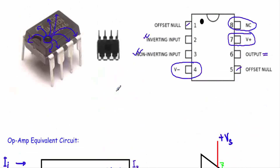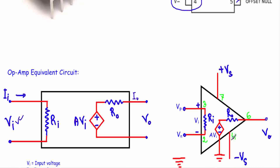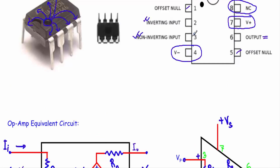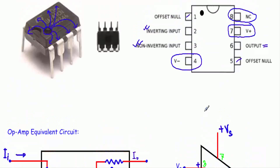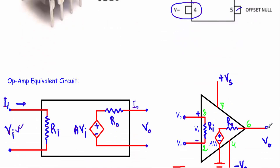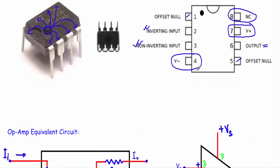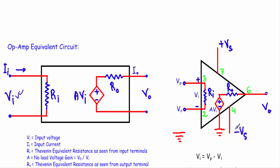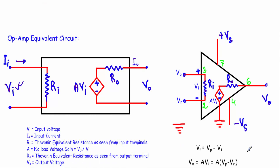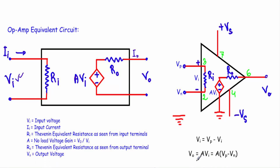Looking at the schematic of the operational amplifier: leg number 2 is used to apply the inverting input, leg number 3 is used to apply the non-inverting input, the output is taken from terminal 6, the positive voltage is applied at terminal 7, and the negative voltage is applied at terminal 4. All these voltages are applied with respect to ground. The output voltage is equal to A times VI, where VI is the voltage difference between the inverting and non-inverting terminals.